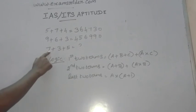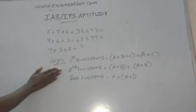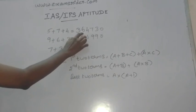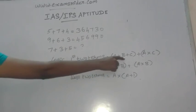Now we find 7 plus 3 plus 5 using the same logic. The logic used in this is, first 2 terms is found using this formula: a plus b plus c plus a into c.